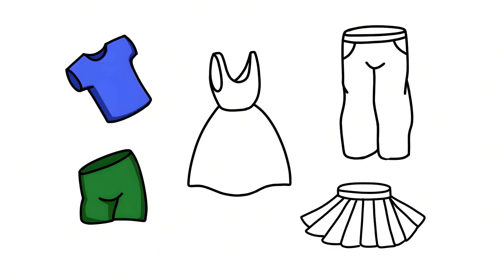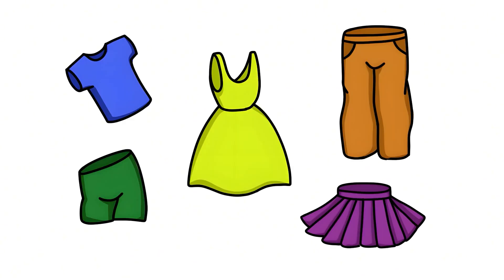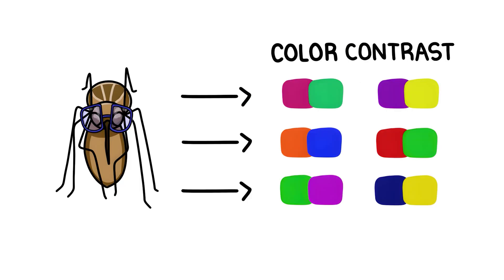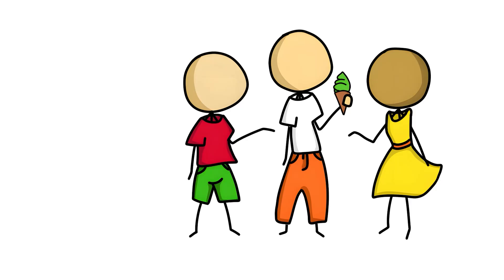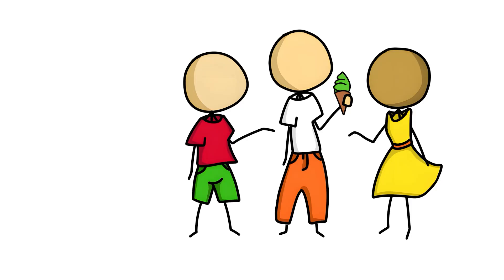But the color of clothing also plays a decisive role. Mosquitoes may not be able to see very well compared to humans, but they can recognize contrasts well. White clothing or clothes in signal colors make it easier for mosquitoes to see us.